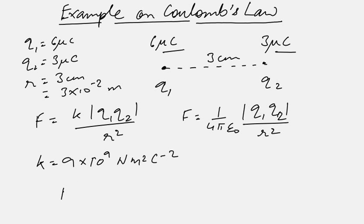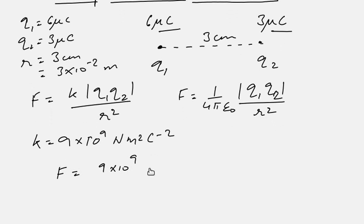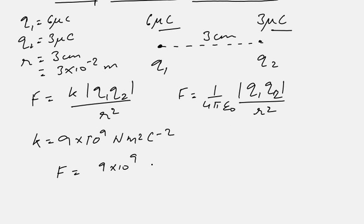We will place the values: F = k, that is 9 × 10⁹. Always make it a habit to place the values with their units in the formula. It is more important if you want to score good marks in subjective exams and is also helpful to avoid errors.